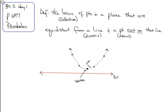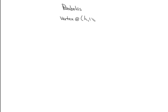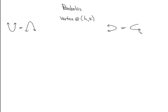For parabolas, everything is done relative to the vertex, and our vertex is going to be at some generic point H, K. There are two different types: parabolas that open up or down — the Y direction parabolas — and parabolas that open left or right — the X direction parabolas. For Y direction parabolas, the equation is (x − h)² = 4p(y − k). For X direction parabolas, (y − k)² = 4p(x − h), where H, K are the coordinates of the vertex.